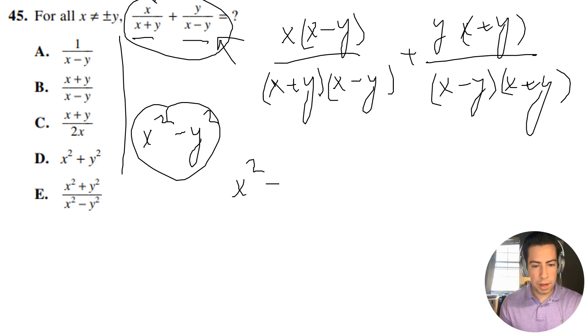So I'm going to have x squared minus xy over x squared minus y squared plus, let's see here, yx plus y squared. And again, this is all over x squared minus y squared.